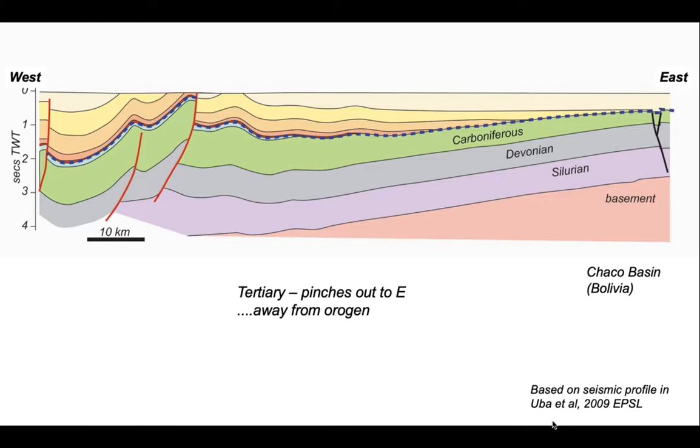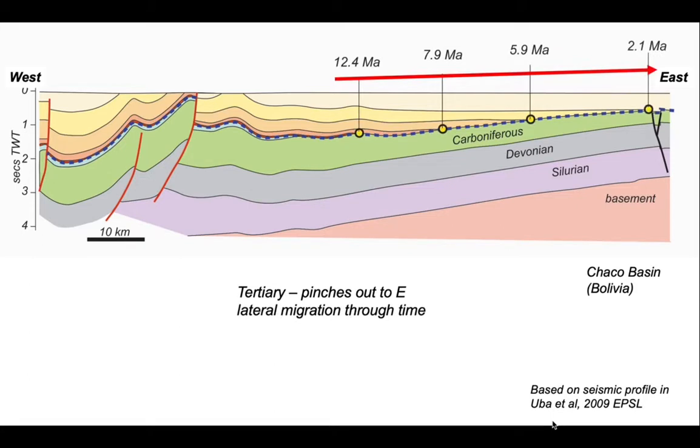This pinch out can be dated. And so the feather edge of the basin has migrated over 10 million years out towards the east, reflecting the migration of the basin and presumably, therefore, the orogenic load of the Andes as the crustal shortening has progressed. Notice that the western side of our basin is deformed as that deformation has continued, folding the foreland sediments.